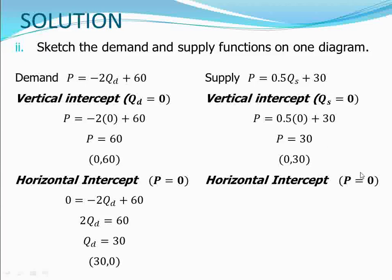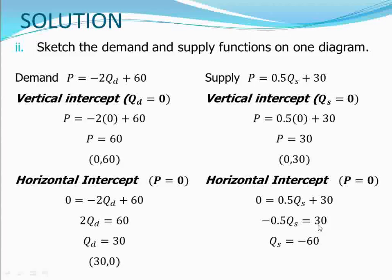For the horizontal intercept of the supply function, we set P = 0: 0 = 0.5QS + 30. Rearranging gives -0.5QS = 30, so QS = -60. The horizontal intercept is (-60, 0). Joining the vertical intercept (0, 30) and horizontal intercept (-60, 0) with a straight line gives us the supply curve.